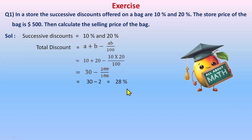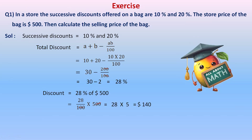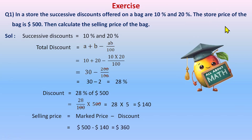Now let's find the discount in dollars. The discount will be 28 percent of $500. Remove the percentage symbol, write 100 in the denominator: 28 by 100, multiply by 500. Cancel the zeros — we're left with 28 multiplied by 5, that is $140. So the discount is $140. For the selling price, we use marked price minus discount: 500 minus 140, which gives the selling price.